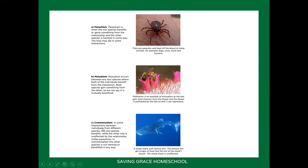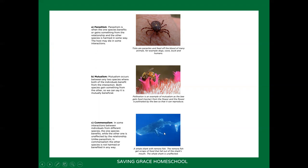Then you get commensalism. This is where one species benefits, but unlike parasitism, the other one is not affected in any way — it is not harmed. An example is a whale shark with remora fish. The remora fish gets scraps of food that fall out of the shark's mouth, but the whale shark is unaffected because it's basically giving its leftovers to the fish and is not losing anything in the process.